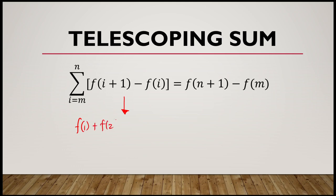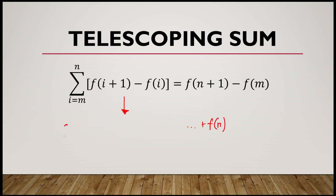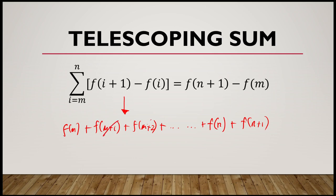For example, when we expand the sigma notation starting from m — that's the lower bound — we get f(m), followed by f(m+1), plus f(m+2), and so on until we reach f(n) and f(n+1). When we expand this telescoping sum, the middle terms cancel out, and what remains is just the two endpoints: the beginning and the next term after the ending, which is f(n+1).